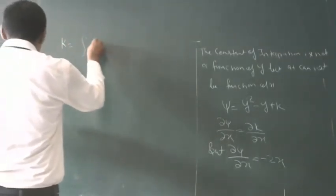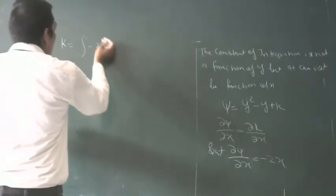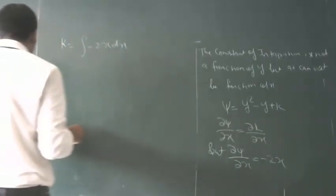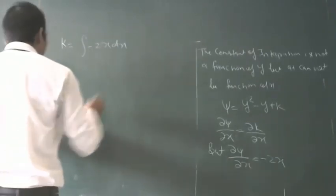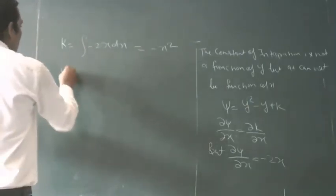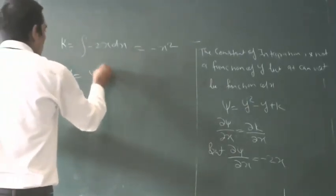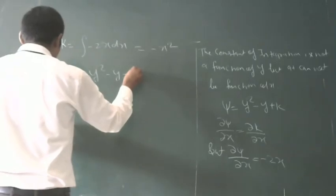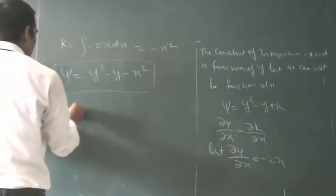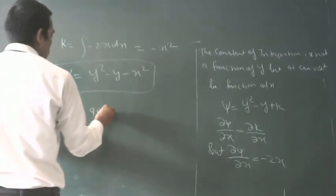The location is -2x. So ψ = 2x - x² or ψ = y² - x².